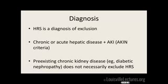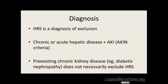How do you diagnose hepatorenal? It's a diagnosis of exclusion — you must make sure they haven't been exposed to nephrotoxins, they don't have glomerulonephritis, they don't have any other disease before you can say it's hepatorenal. Just because you have CKD doesn't mean you can't also have hepatorenal. Someone with CKD from diabetes with a creatinine of 2 can still have hepatorenal as long as they have some liver abnormalities.